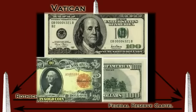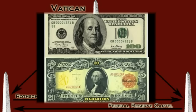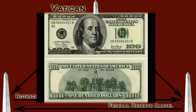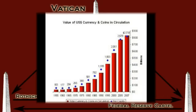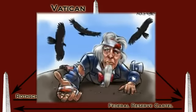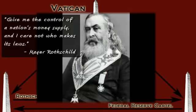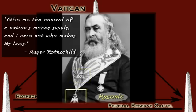Before 1933, the dollar stated it was redeemable in gold. After 1933, it is just legal tender — worthless paper. The only thing that gives it value is the amount of notes in circulation. The power to regulate the money supply is also the power to regulate its value, which is also the power that can bring entire economies and societies to their knees. 'Give me the control of a nation's money supply, and I care not who makes its laws.'